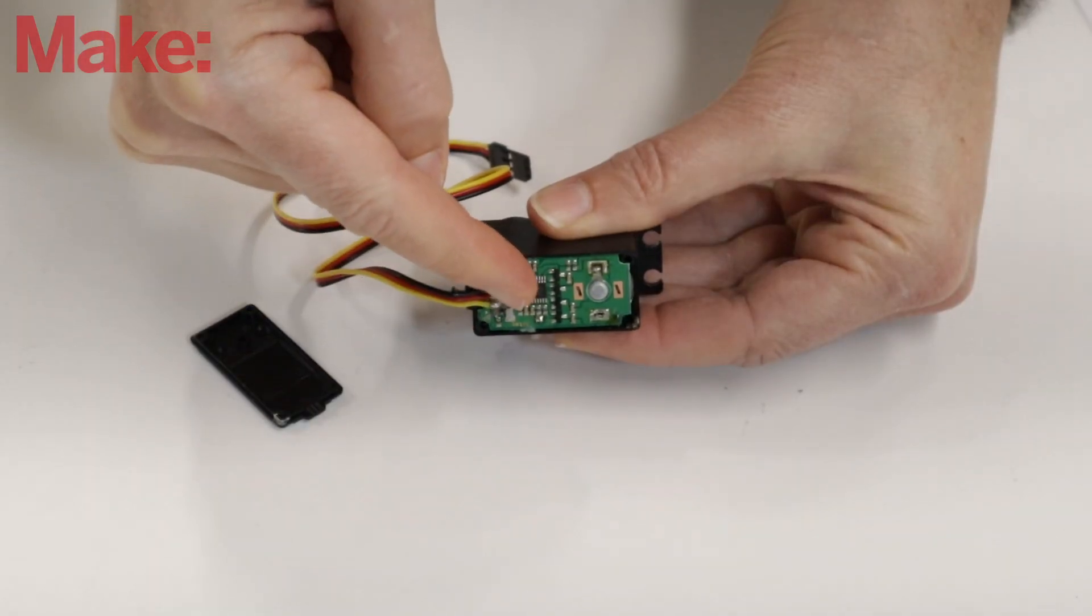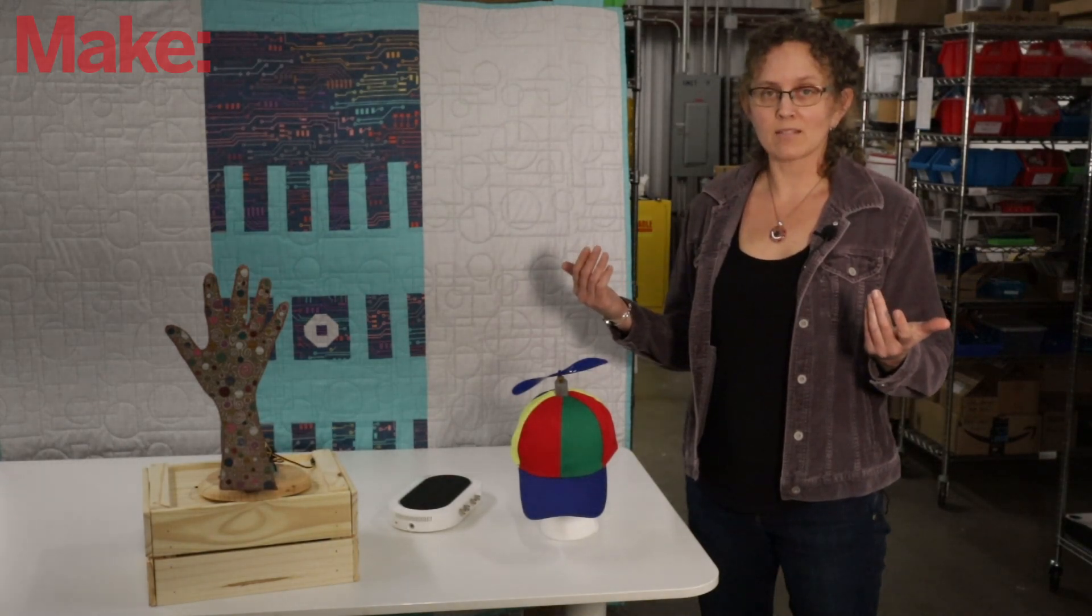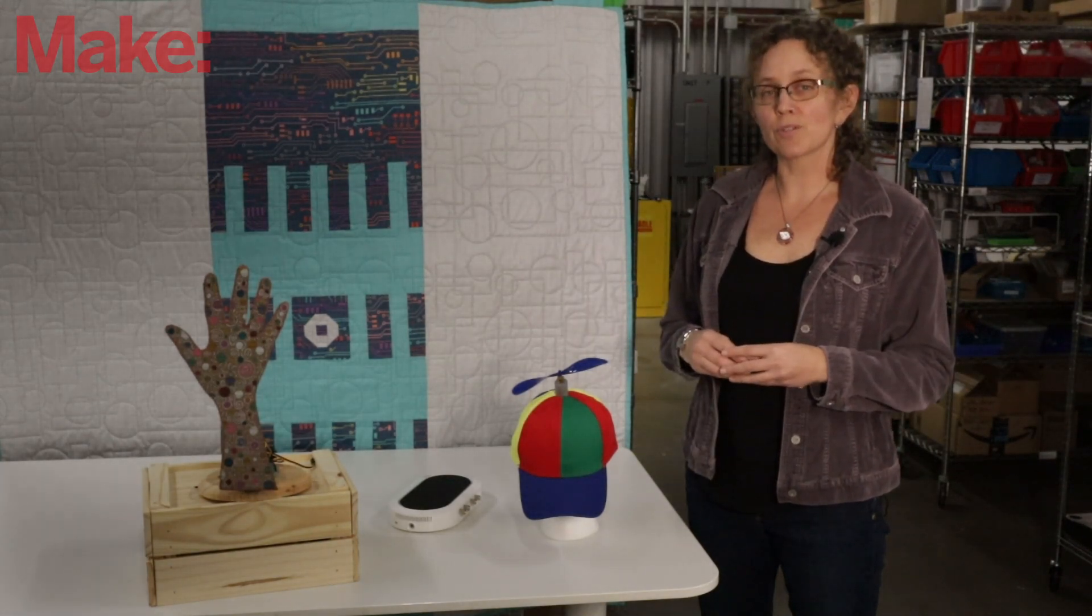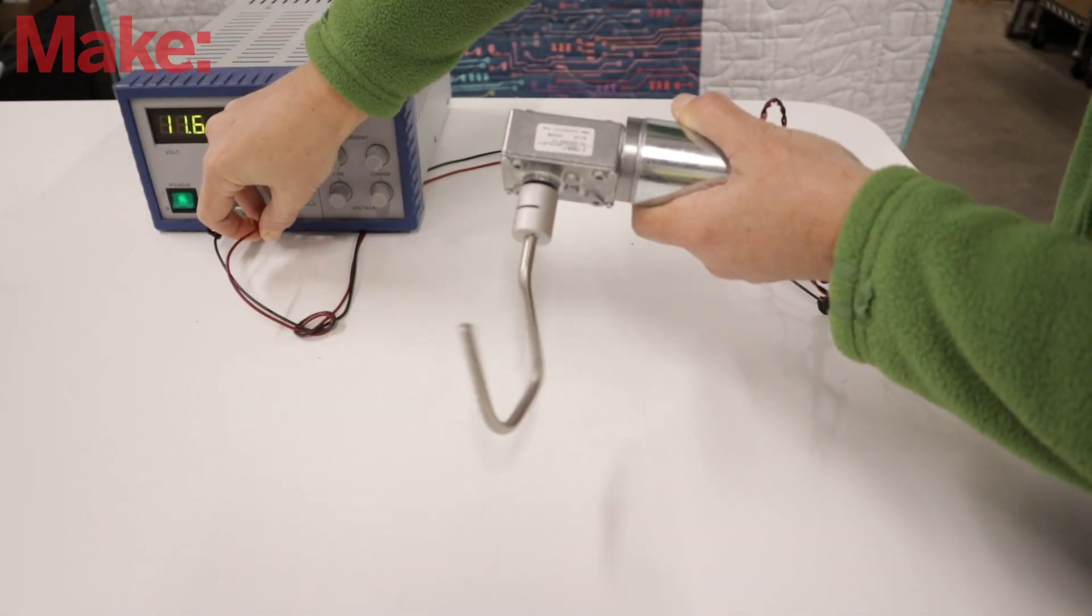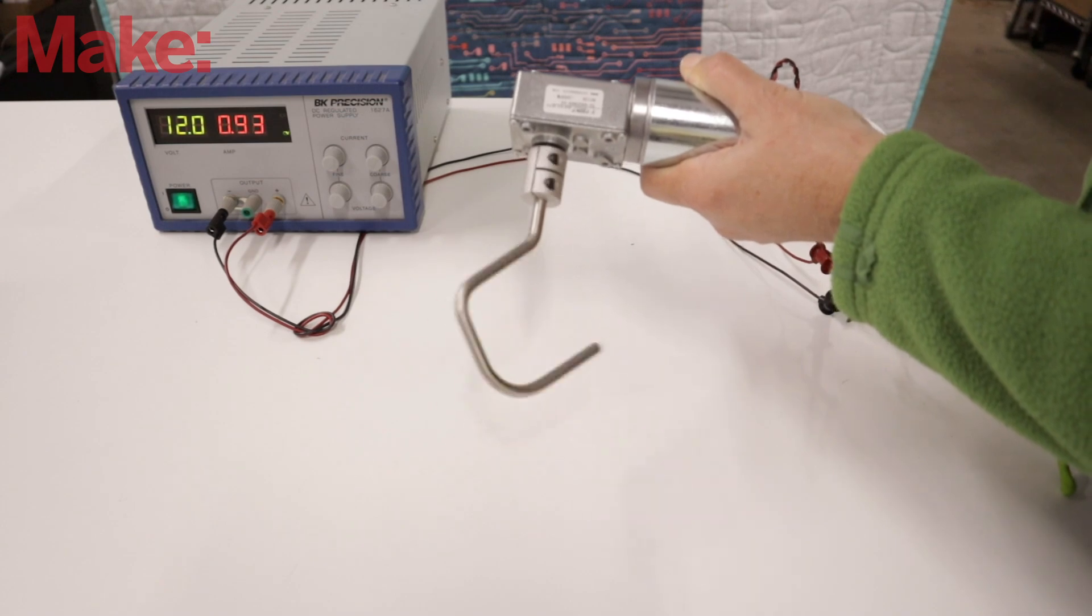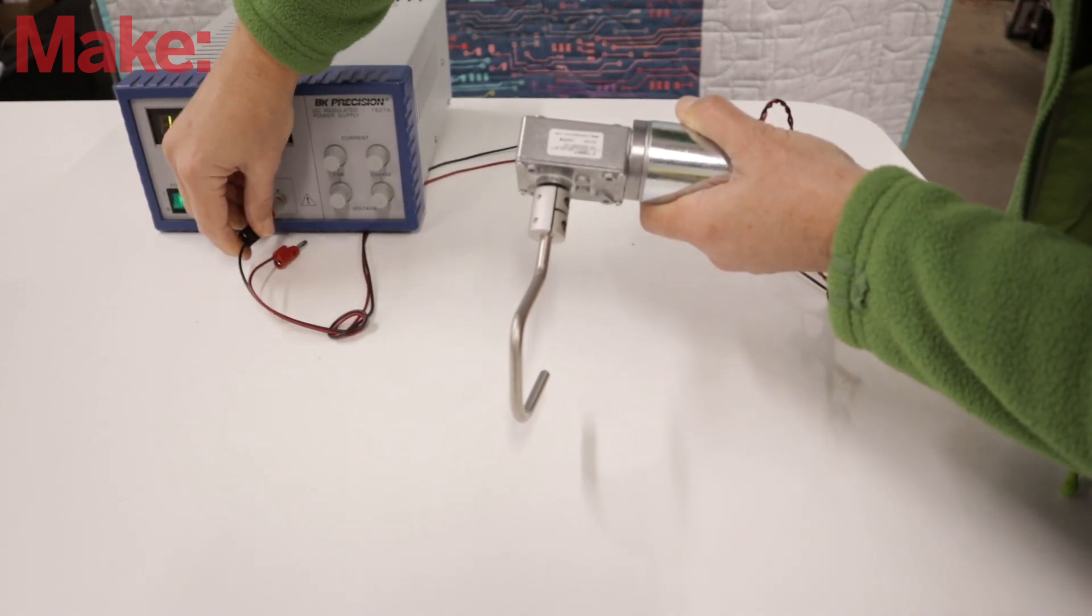Now that we understand the servo's PWM input and its feedback voltage, let's talk about how the little controller board works. How does it tell the motor which direction to go and how fast? A common method is to use a circuit called an H-bridge. A motor will spin in one direction when power and ground are applied to its leads. It'll spin in the opposite direction when the power is reversed.